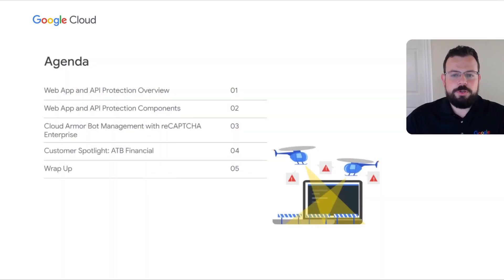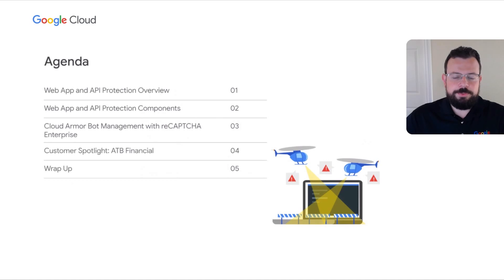In today's talk, we will first go through an overview of Google's web app and API protection solution. Next, we'll touch upon the three core components of our end-to-end WAP solution consisting of Cloud Armor, reCAPTCHA Enterprise, and Apigee. After that, we'll tell you about our latest announcements, which is a deep integration of Cloud Armor and reCAPTCHA Enterprise at the edge of Google's network. And finally, we will do a deep dive on ATB Financial's use case for and perspective on partnering with Google to protect their mission-critical applications.